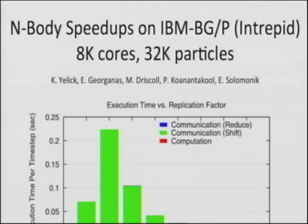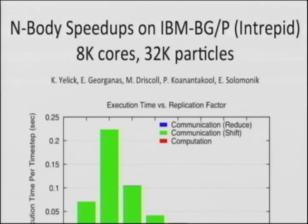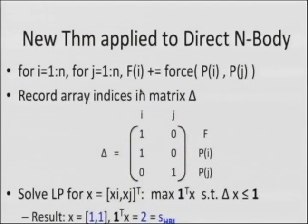On a 32,000-particle N-body run with 8,000 cores — four particles per core — if we have only one copy of data (C=1), almost all time is spent in communication. But with two or four copies, communication goes away entirely and we get perfect strong scaling. For those in the database world, join looks exactly the same as this with the classical join algorithm, so the same analysis and speedups apply there.